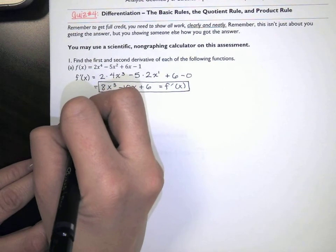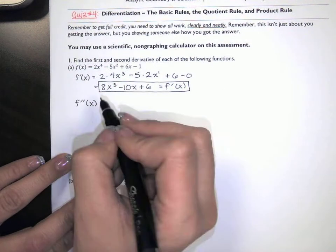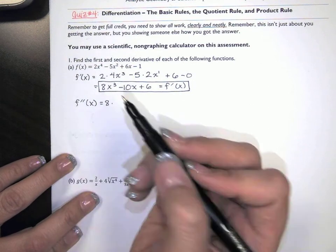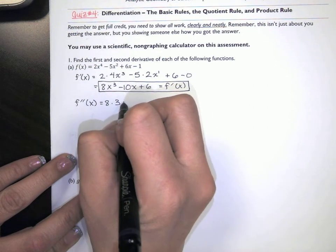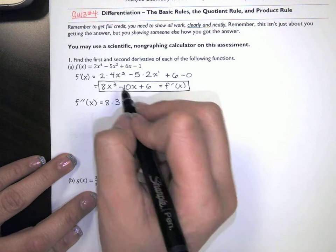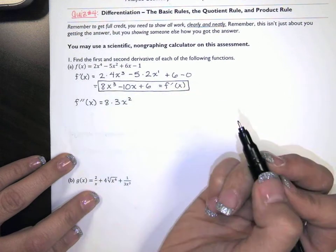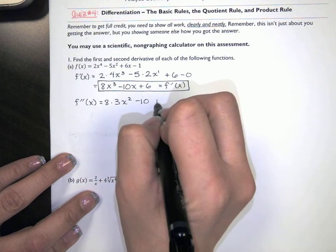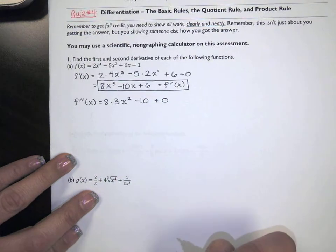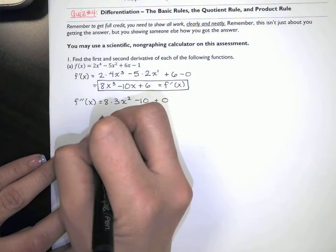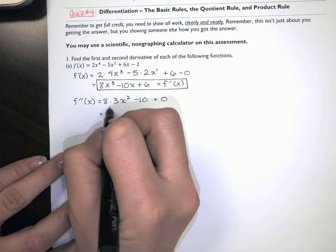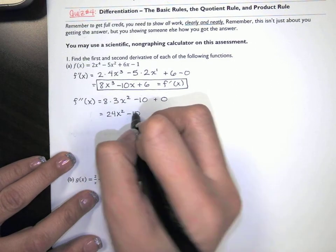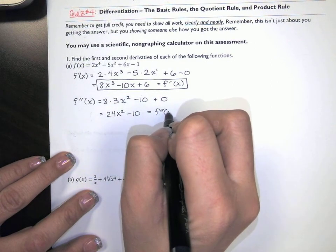To compute the second derivative, we just differentiate again. I bring my 8 down and take the derivative of x to some power — that power times x to the one less power; one less than 3 is 2. The derivative of a constant times x is just our constant, and the derivative of a standalone constant is 0. So this turns out to be 8 times 3, which is 24, times x squared minus 10 — that's our second derivative.